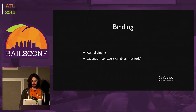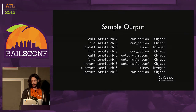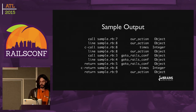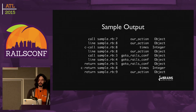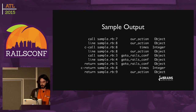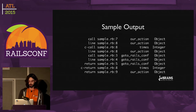So let's add some output to see how our program looks from a debugging point of view. We see that first of all, we call method our_action on an object. Then a line event gets generated for that method. Then we have c_call as we are entering the times method — that's a c_call because it's a core method implemented in C. Then we get a line event for the times block, then a call event for the go_to_rails_conf method, a line event for that method, and basically we are returning from all of those.